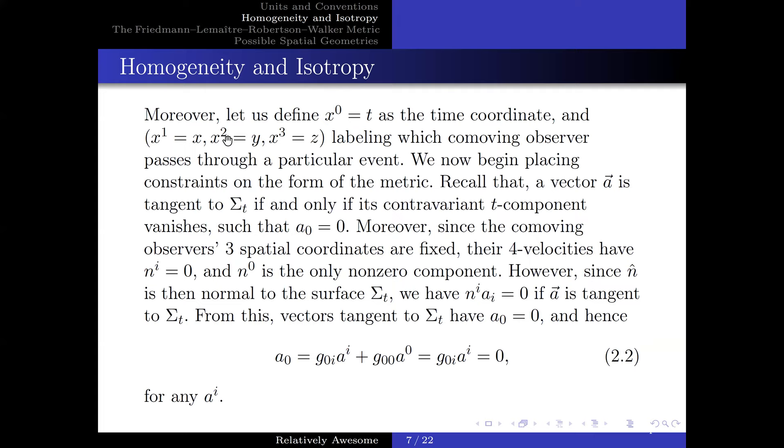Moreover, let us define x^0 to be t as the time coordinate and x^1, x^2, and x^3 to be x, y, z as the Cartesian coordinates, labeling which comoving observers passes through a particular event. Now, we begin placing constraints on the form of the metric. Recall that a vector A is tangent to Σ_t if and only if its contravariant t component vanishes, such that A_0 equals 0. Moreover, since the comoving observer's three spatial components are fixed, their four velocities have n^i equal to 0 and n^0 is the only non-zero component. However, n̂ is then normal to the surface Σ_t, and we have n^i times A_i equal to 0 if A is tangent to Σ_t. And from this, the vector tangent to Σ_t have A^0 is equal to 0, and hence, we have g_0i times A^i is equal to 0 for any A^i.